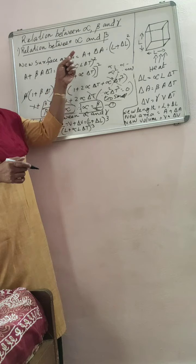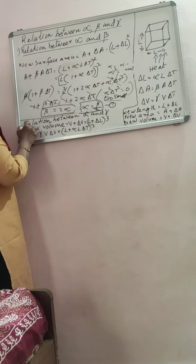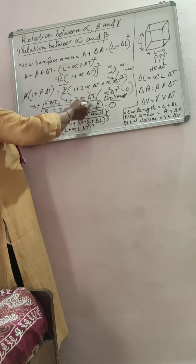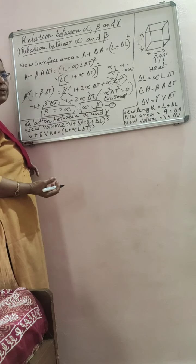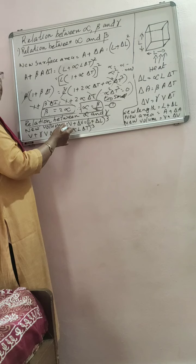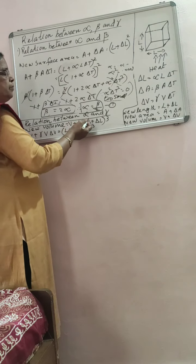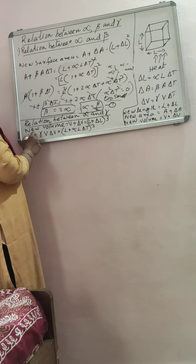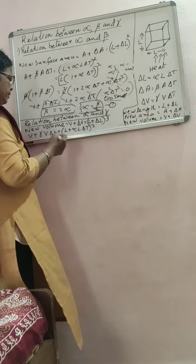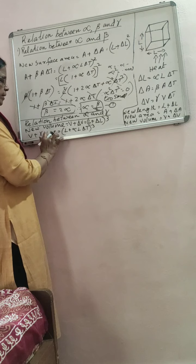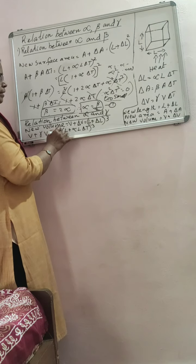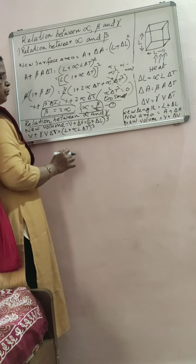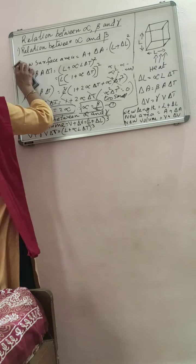The next relation is connecting alpha and gamma. We have seen alpha and beta; now alpha and gamma. For that, consider the same cube. Now we have to consider the volume increase. The new volume equals V plus delta V. Volume of the cube is L cubed, so the new volume equals (L plus delta L) cubed. Substituting delta V equals gamma V delta T: V plus gamma V delta T equals (L plus alpha L delta T) cubed.